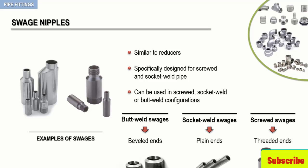Because socket weld swages are inserted into mating fittings, many companies allow the substitution of beveled end swages. Since the end is inserted into the fitting and the weld is made on the outside of the fitting, it makes little difference how the end cut is made.